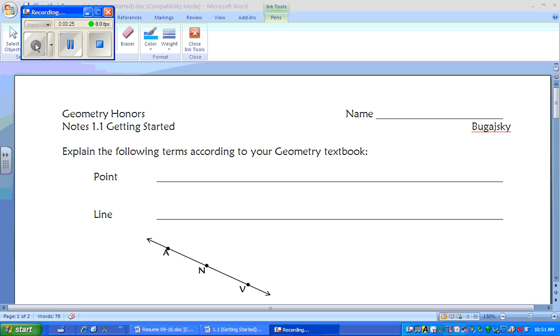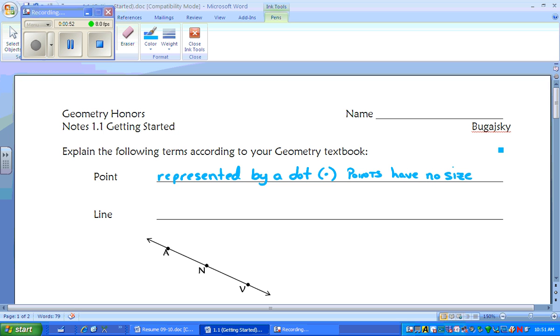A point is represented by a dot. Points have no size, only position. Points are named by a capital letter, so this would be point B.